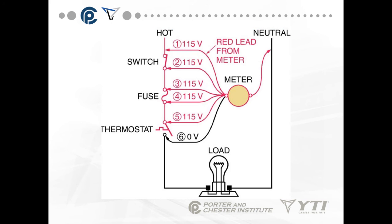With one lead on neutral, you work into the circuit one point at a time. When you go to the load side of the thermostat and get zero volts, you know you had voltage coming into the switch but not coming out. You have to find out why. With a thermostat, it could be bad, could have bad contacts, or it hasn't reached the proper set point temperature of the space it's trying to control.